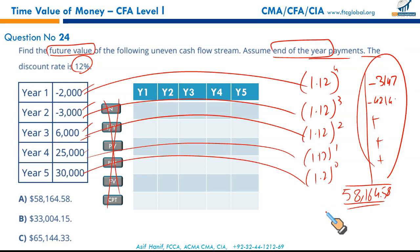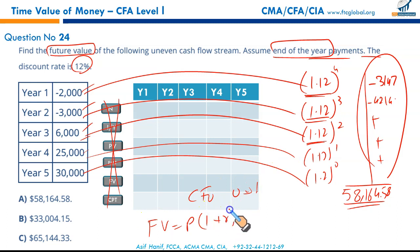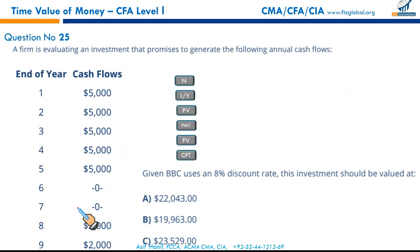This is the only way to solve uneven future cash flows — FV = cash flow × (1 + r)^n for each period. For calculating present value you can use the CF/NPV function, but for future value, unfortunately this individual calculation is the only way. The total is $58,164.